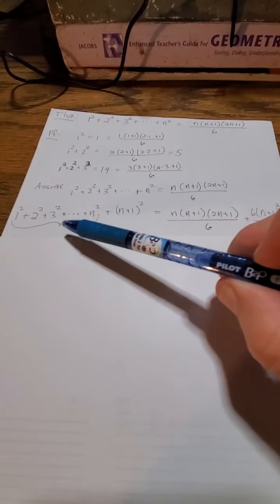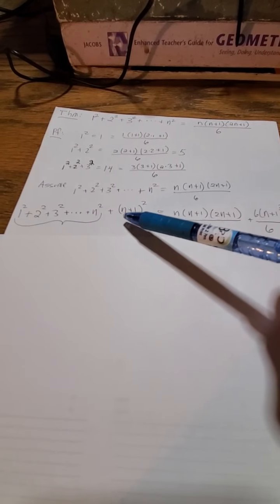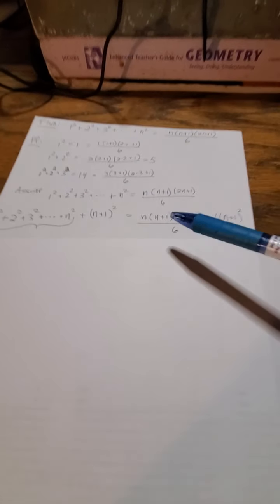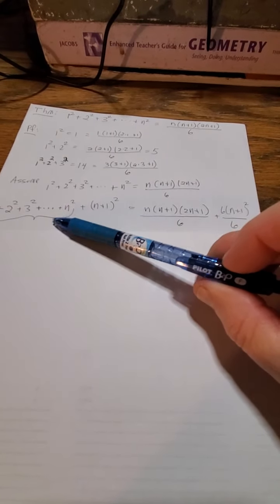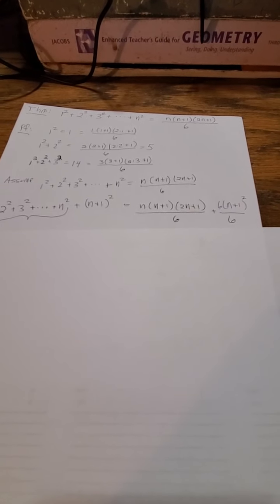So, I now have the sum of the squares from 1 squared all the way up to n plus 1 squared. And that's going to equal n times n plus 1 times 2n plus 1 over 6, which is just bringing that right down. That's equal to the bracketed part right there. Plus n plus 1 squared. But I wrote n plus 1 squared as 6 times n plus 1 squared over 6 because I'm going to combine the fractions.